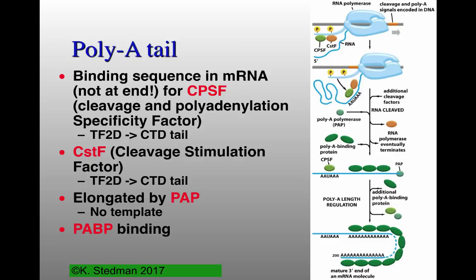Now we need to think about the 3' end of the messenger RNA. The 3' end has a specific sequence bound by the cleavage and polyadenylation specificity factor, CPSF. This recruits the cleavage stimulation factor through protein-protein binding, causing endonucleolytic cleavage of the messenger RNA. After cleavage, poly-A polymerase associates with this end and extends it, with poly-A binding proteins associating as well. The 5' piece left after cleavage is degraded by an exonuclease, which seems to lead to transcriptional termination by eukaryotic RNA polymerases.